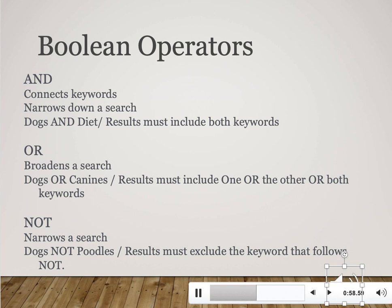OR does the opposite — it makes the search bigger. It brings back one of your keywords, OR the other one, OR both together. For instance, searching for 'dogs OR canines' tells the catalog to bring back articles or books listing the word 'dogs,' but also those listing 'canines,' and also those listing both. By using OR you cast a really wide net, so you have a better chance of seeing everything that's out there on your topic.